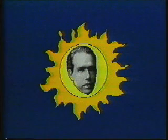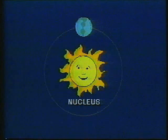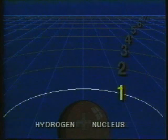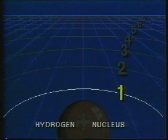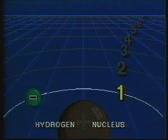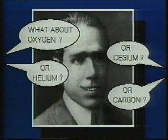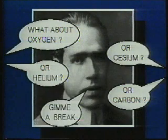It was Niels Bohr who discovered that the laws of physics which govern the motion and behavior of large bodies was not adequate to account for the motion of tiny particles such as atoms and electrons. With his model, Bohr could explain the behavior of atoms with one electron, but he could not predict the radiation spectrum observed for other more complex atoms.